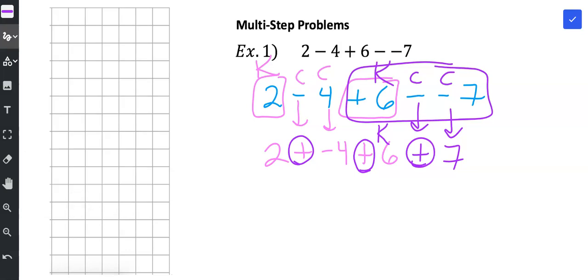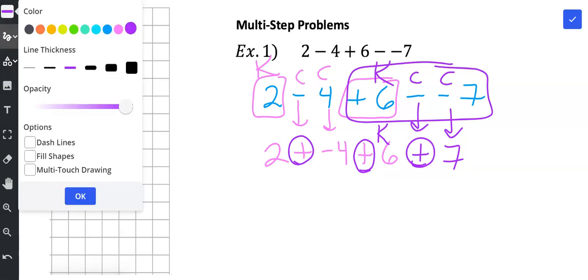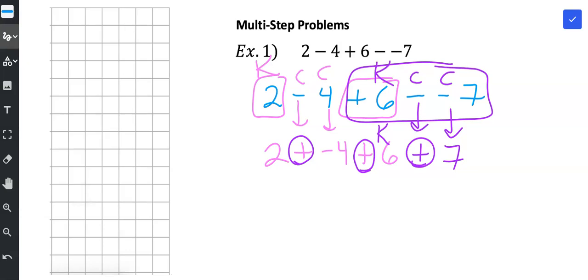Now that they're all addition, I can go ahead and add. So let me grab a different color. And I'm going to start on the left and move to the right. And I'm just going to add 2 plus a negative 4. You can use a number line or integer chips. I'm going to use integer chips.